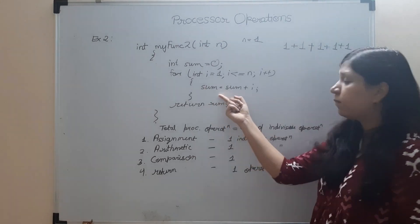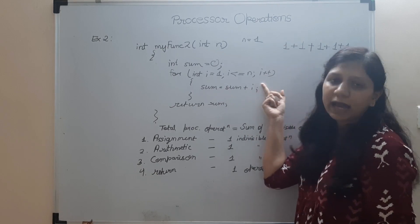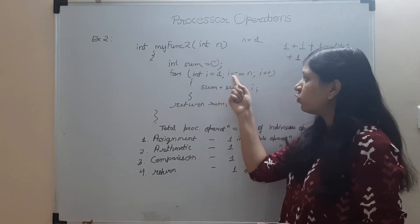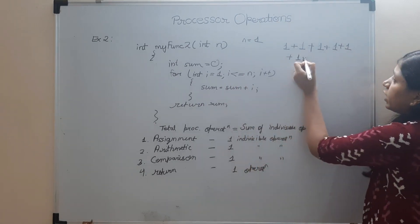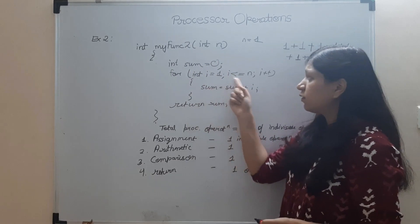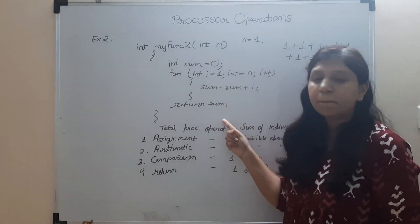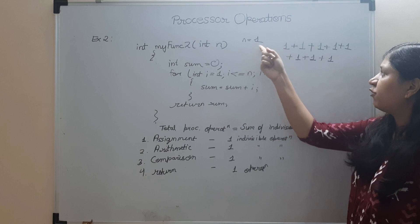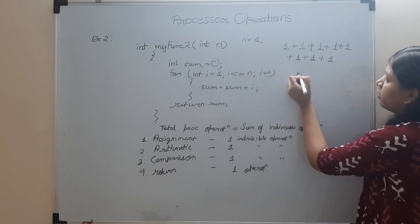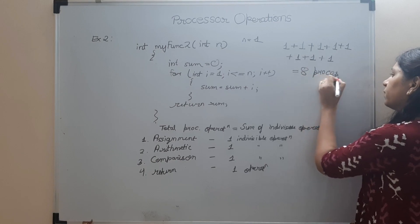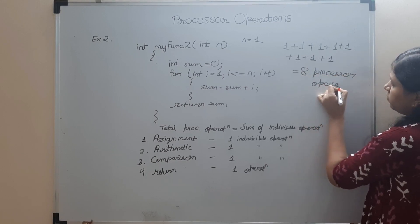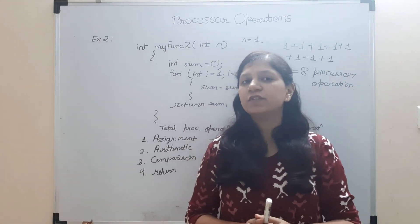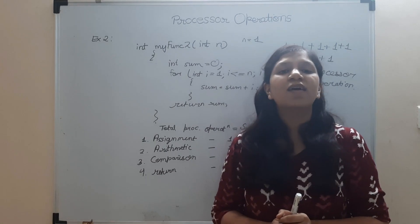We will increment i, so this again is one operation - increment. After that, i is 2, so 2 <= 1, this comparison is going to take one operation. And then you are out of this loop because this condition is false. Now you will return sum, so this is going to be plus 1. Now these are the number of operations it took in case of n = 1. What is it? 1, 2, 3, 4, 5, 6, 7, 8 - eight processor operations. So now we know how to calculate processor operations, which was the goal of this tutorial. You should know how many processor operations it is going to take.